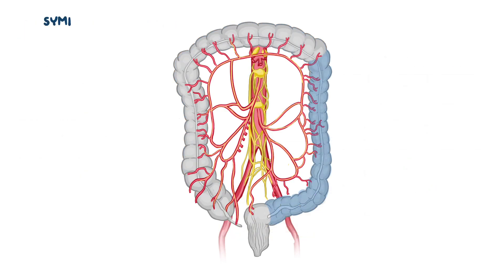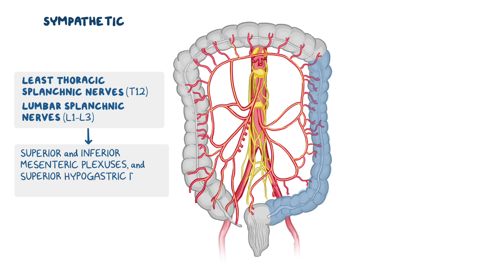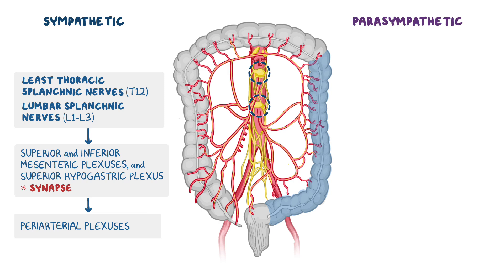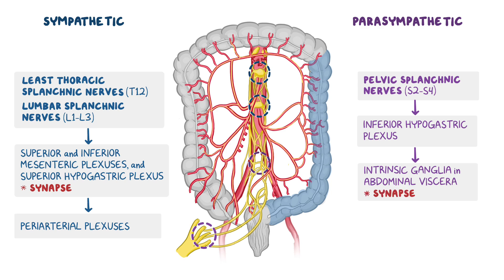For the descending and sigmoid colon, the sympathetic innervation is mainly from the least thoracic splanchnic nerves coming from T12, as well as the lumbar splanchnic nerves coming from L1 to L3, which all travel through the superior and inferior mesenteric plexuses and superior hypogastric plexus where they will synapse, with fibers eventually traveling through the periarterial plexuses before reaching their end destination. The vagus nerve stops its parasympathetic innervation at the level of the left colic flexure, so below this point the parasympathetic innervation now comes from the pelvic splanchnic nerves, which derive from the anterior rami of spinal nerves S2 to S4. These fibers then travel through the inferior hypogastric plexus and eventually synapse in intrinsic ganglia throughout the abdominal viscera near the structures they innervate. After synapsing, both nerve pathways go on to innervate the descending and sigmoid colon.